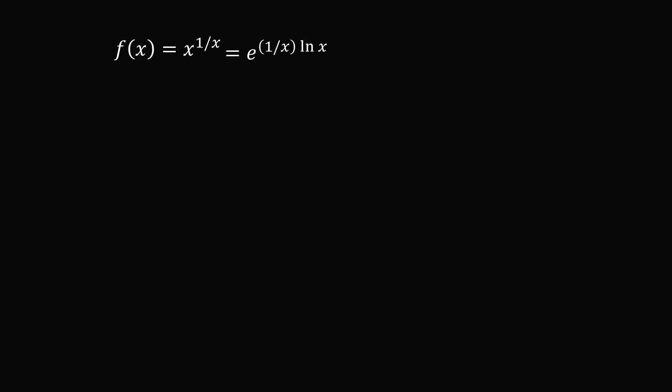We will now take the derivative of this function. So we have e^((1/x)ln x), and then we take the derivative of the exponent. The derivative of (1/x)ln x is a standard quotient rule, and we end up with (1 - ln x)/x^2.